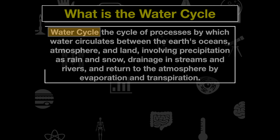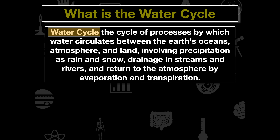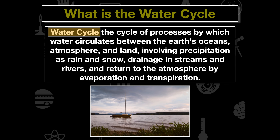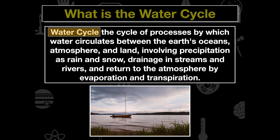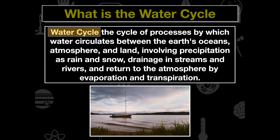So what is the water cycle? The water cycle is a process by which water circulates between the earth's oceans, atmosphere, and land. This involves precipitation as rain and snow, drainage into streams and rivers, and the return of water to the atmosphere via evaporation and transpiration. It shows the continuous movement of water within the earth and the atmosphere. Water exists as a liquid, a vapor, and a solid as it originates in the clouds, precipitates back to earth, and is evaporated or transpirated back into different systems.